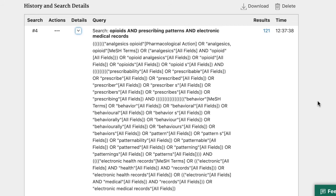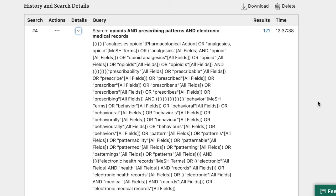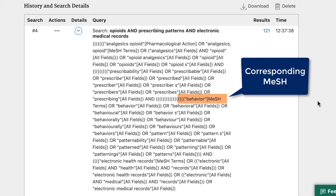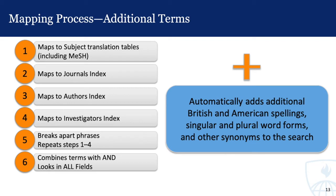If no match is found — which is the case with prescribing patterns — then PubMed breaks apart the phrases in the search and tries to map the individual words to these indexes. While PubMed wasn't able to map the word prescribing to a MeSH, it mapped patterns to the MeSH term behaviors. The last step PubMed takes if a single word can't be mapped is to combine the single words with AND and search in all fields except for the place of publication and any date fields. Regardless of whether PubMed finds a match or not, it also automatically adds additional British and American spellings, singular and plural word forms, and other synonyms to the search.